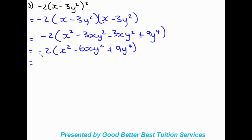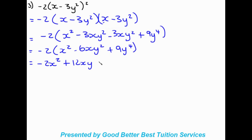Now we distribute the negative 2 into the brackets: negative 2 times x squared gives negative 2x squared; negative 2 times negative 6xy squared gives positive 12xy squared; and negative 2 times 9y to the power of 4 gives negative 18y to the power of 4.